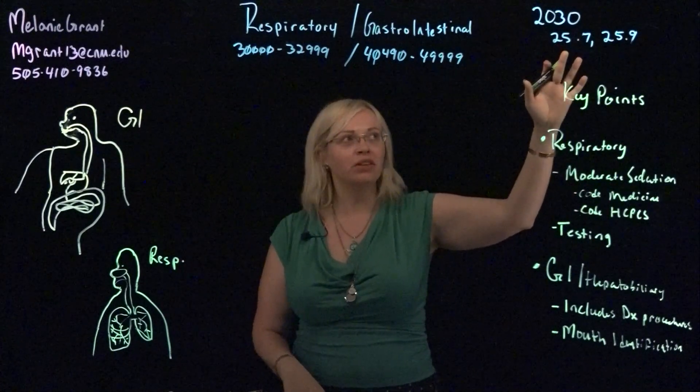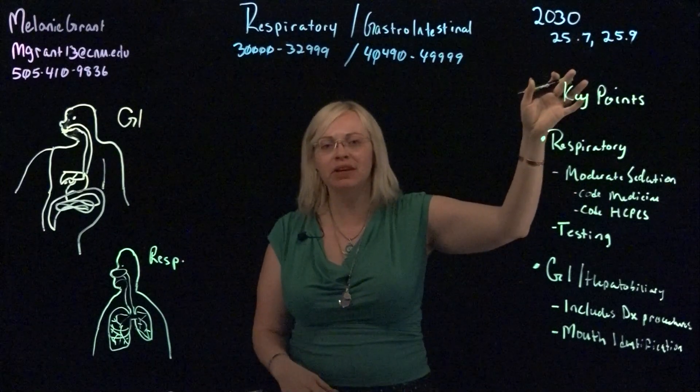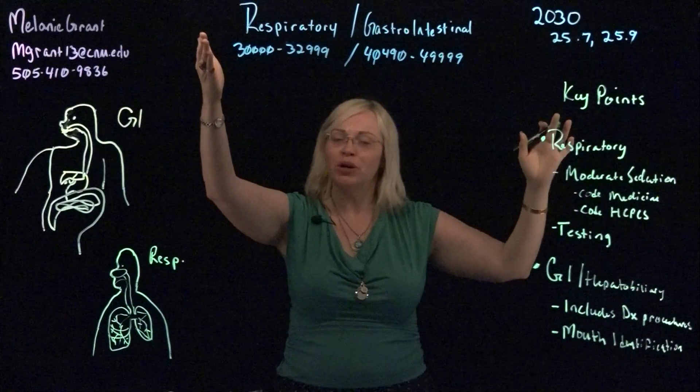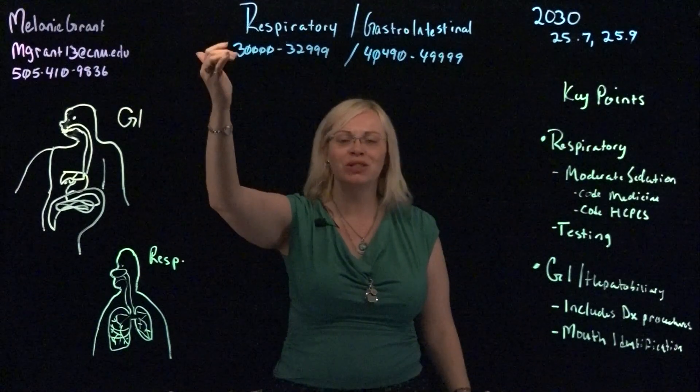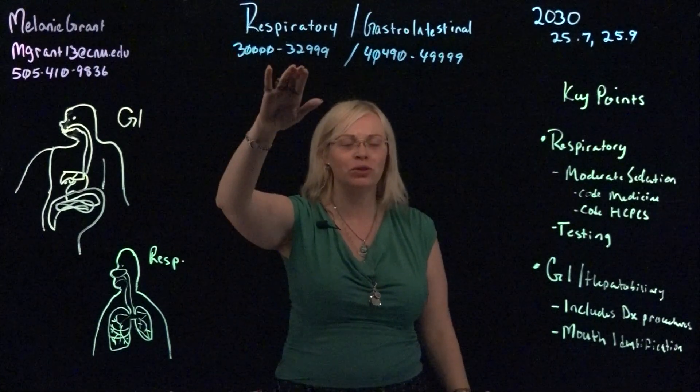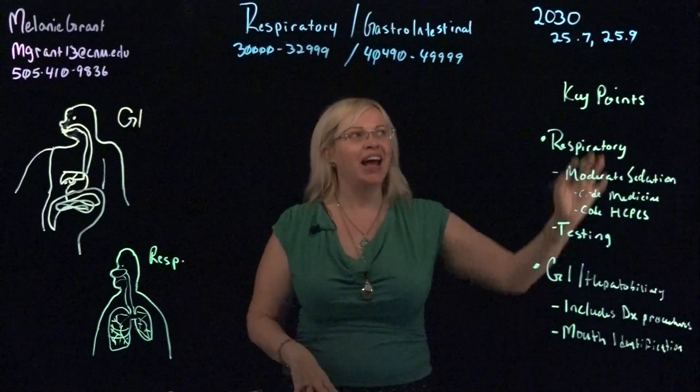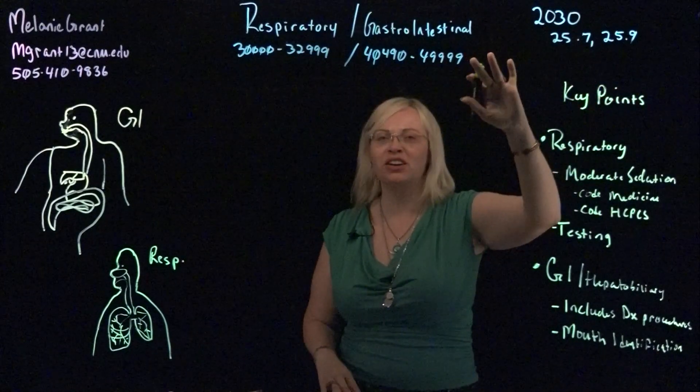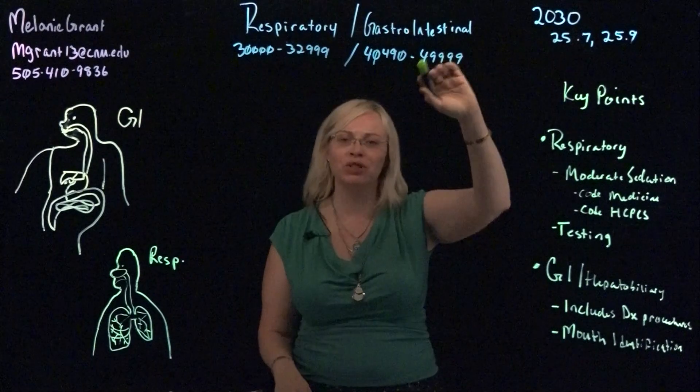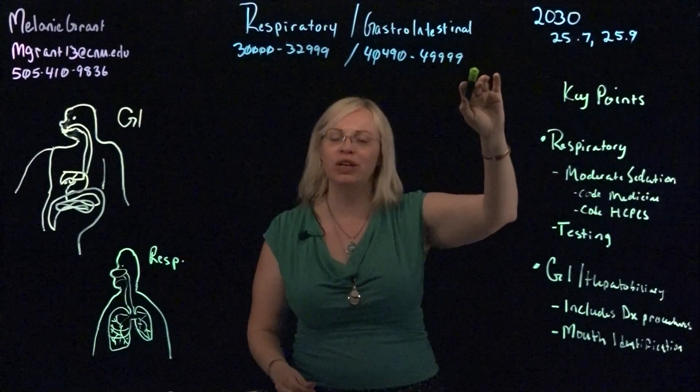Today we're focusing on class 2030 for sections 25-7 which focus on respiratory coding with sections 30000 through 32999 and section 25-9 which looks at our gastrointestinal section for 40490 through 49999.